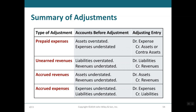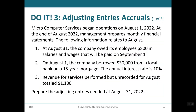Summary of all adjusting entry categories: Prepaid expenses — asset overstated, expense understated; debit expense, credit asset or contra asset. Unearned revenue — liability overstated, revenue understated; debit liability, credit revenue. Accrued revenue — asset understated, revenue understated; debit asset, credit revenue. Accrued expenses — expense understated, liability understated; debit expense, credit liability. These rules apply throughout the entire course.